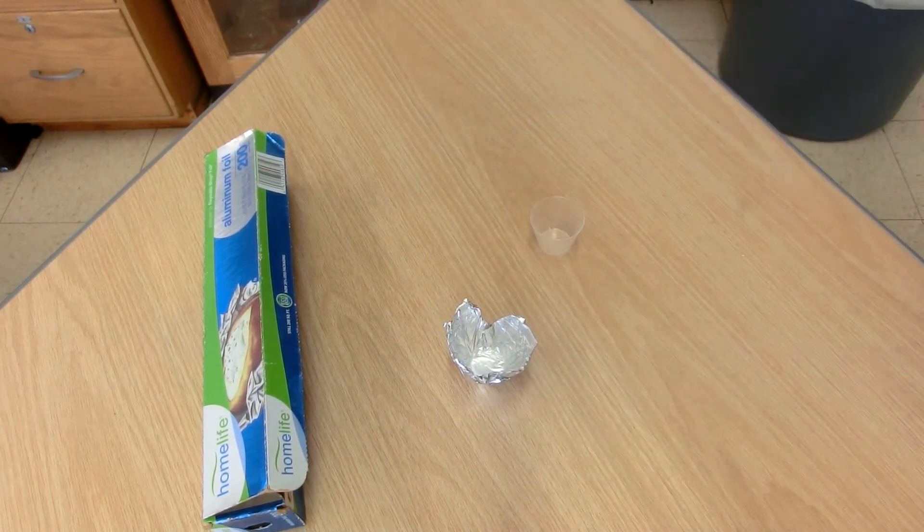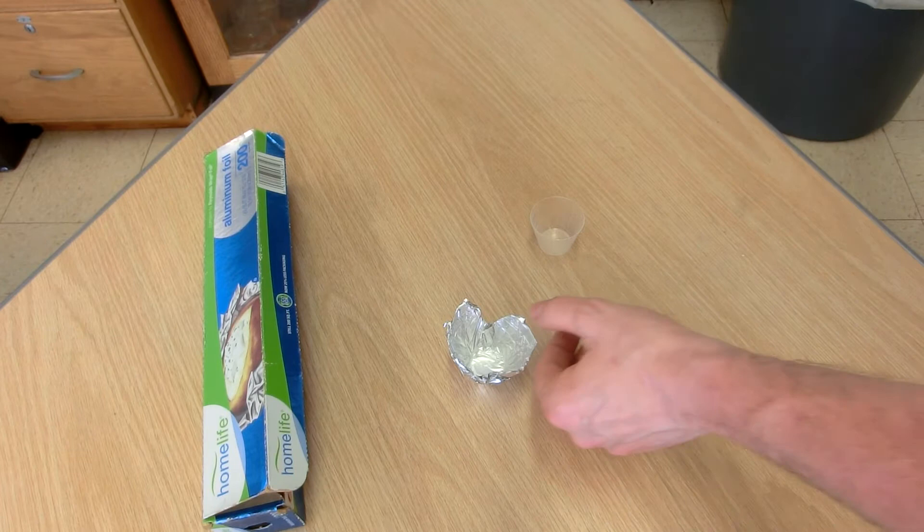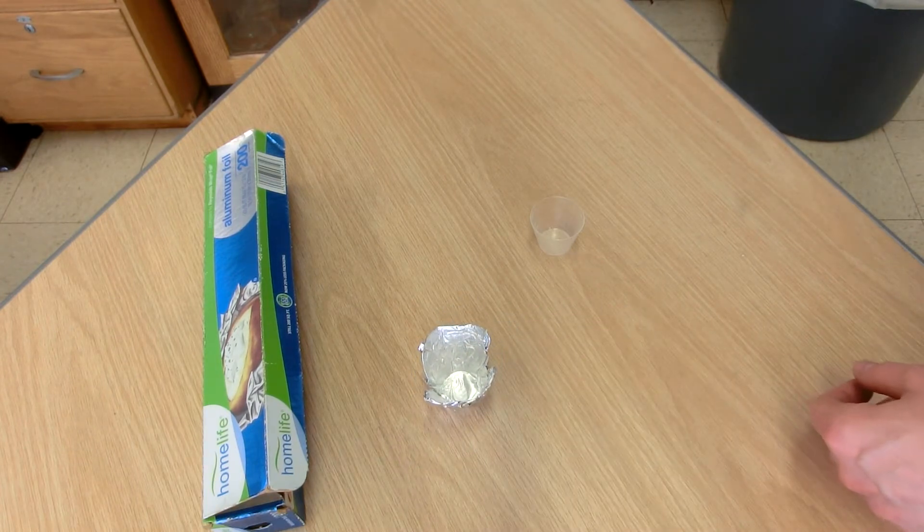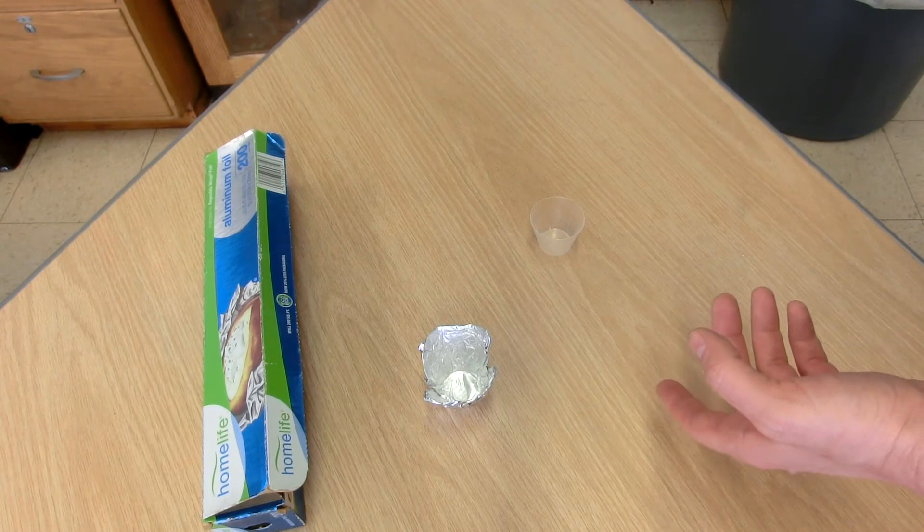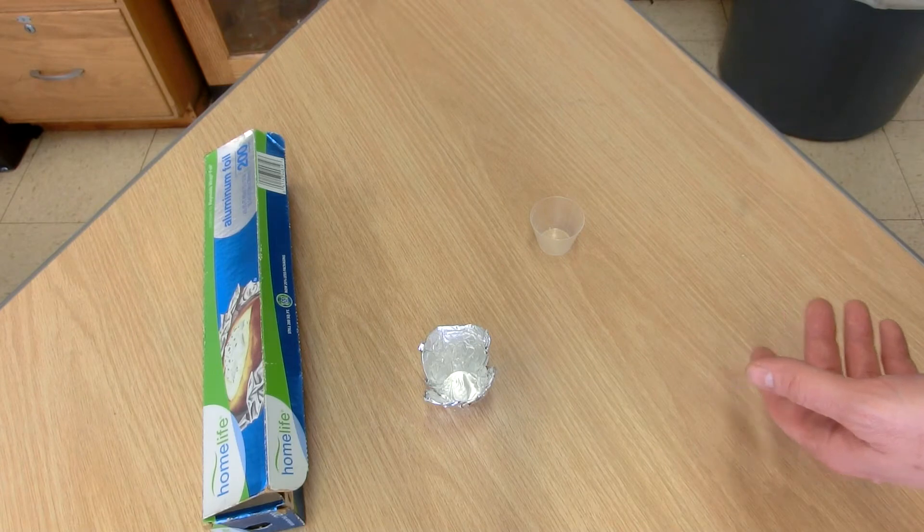It has a flat bottom so it can sit on a hot plate. I would not use this with a Bunsen burner because aluminum might melt in the flame. Aluminum has a melting point of around 660 Celsius, and Bunsen burner flames can get that high, so it could melt the aluminum directly.